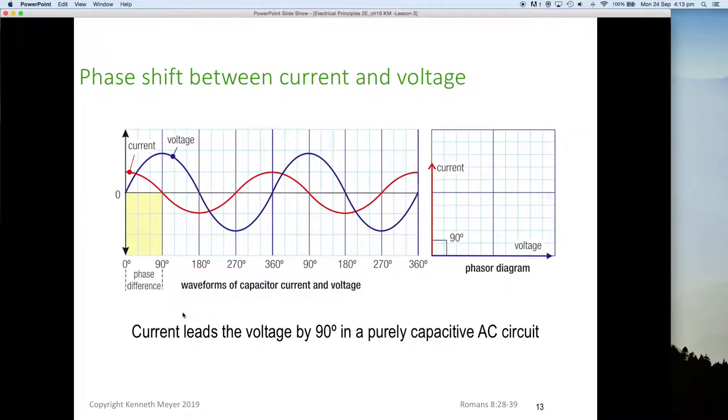So we end up with this thing called a phase shift between the current and the voltage. And I'll explain a little bit more about why that happens shortly. But this is what happens. We end up with this phase difference for capacitors at 90 degrees.